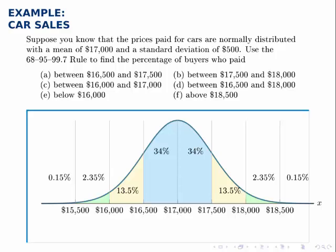So we have it centered at $17,000, we go up to $17,500, $18,000, $18,500, and we could keep going but that's all we need. And then on the lower side we go down to $16,500, $16,000, and $15,500.